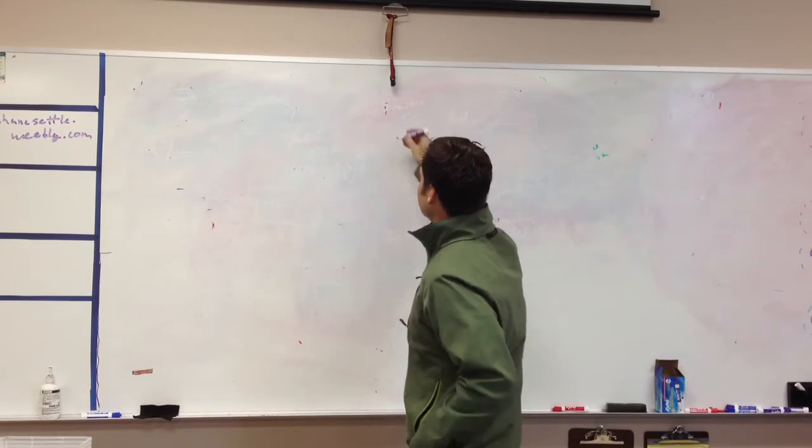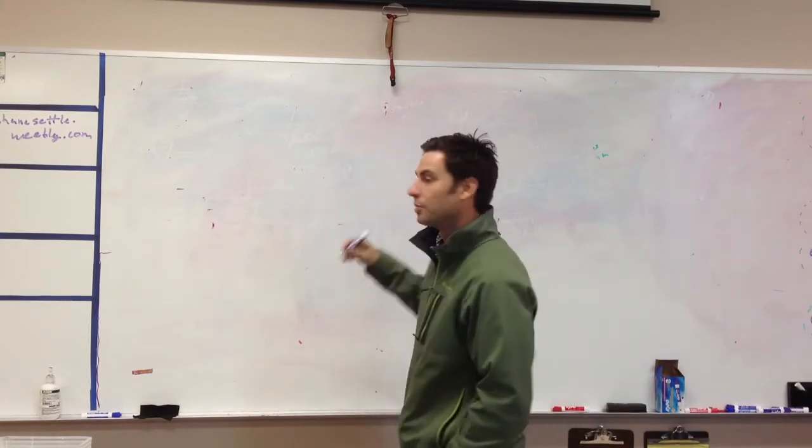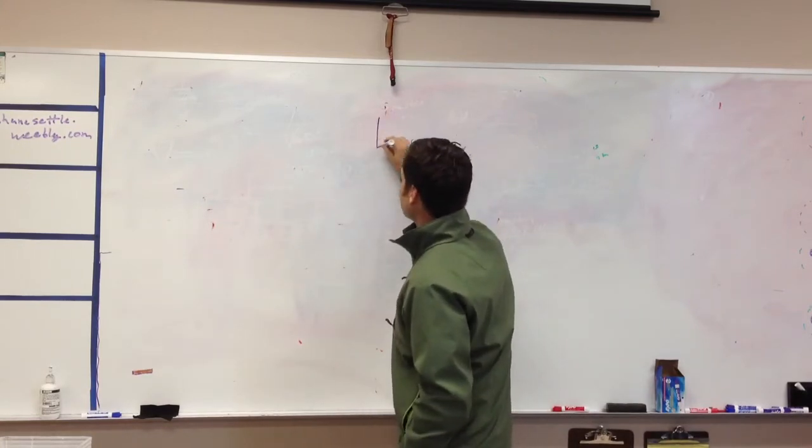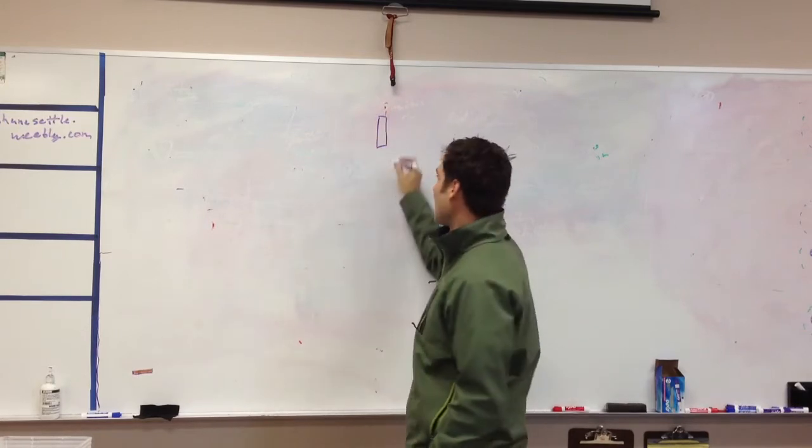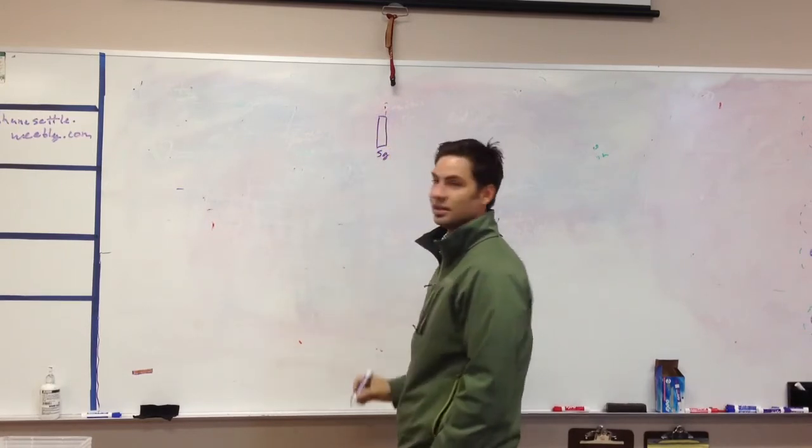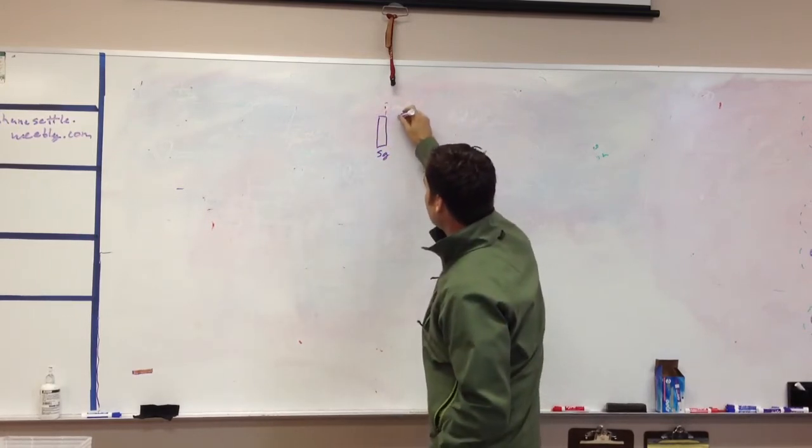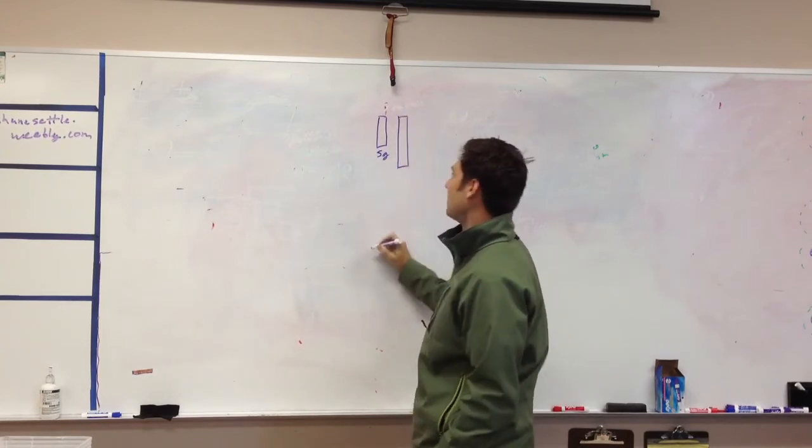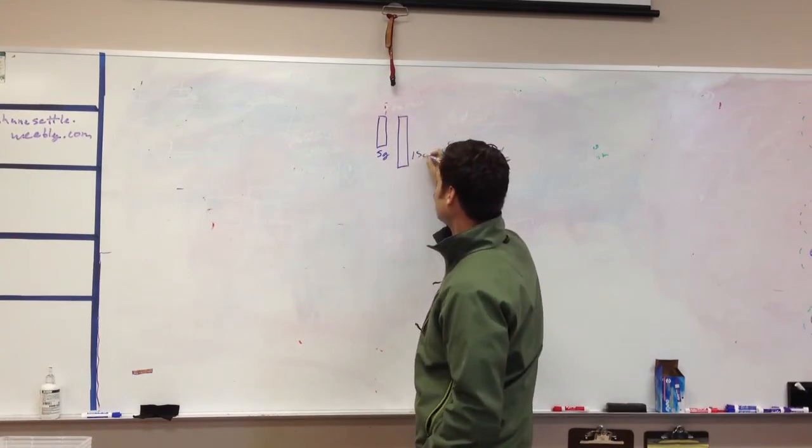So let me give you an example. Say you have a bungee cord or a rubber band or something that's elastic. So there it is. Let's say I add 5 grams of mass. What it's saying is maybe the rubber band will stretch not much, maybe 15 centimeters.